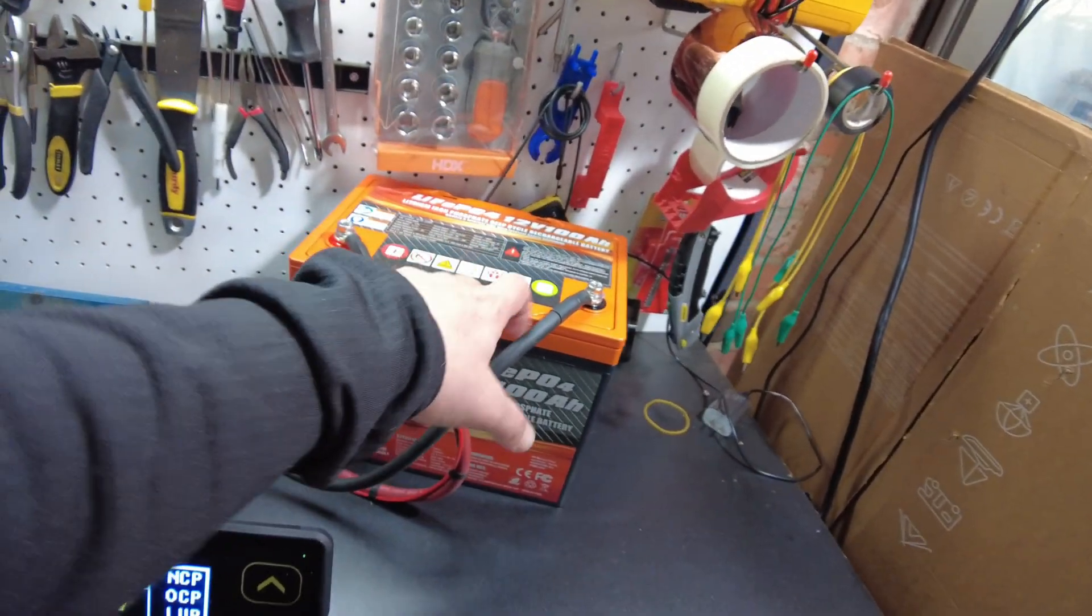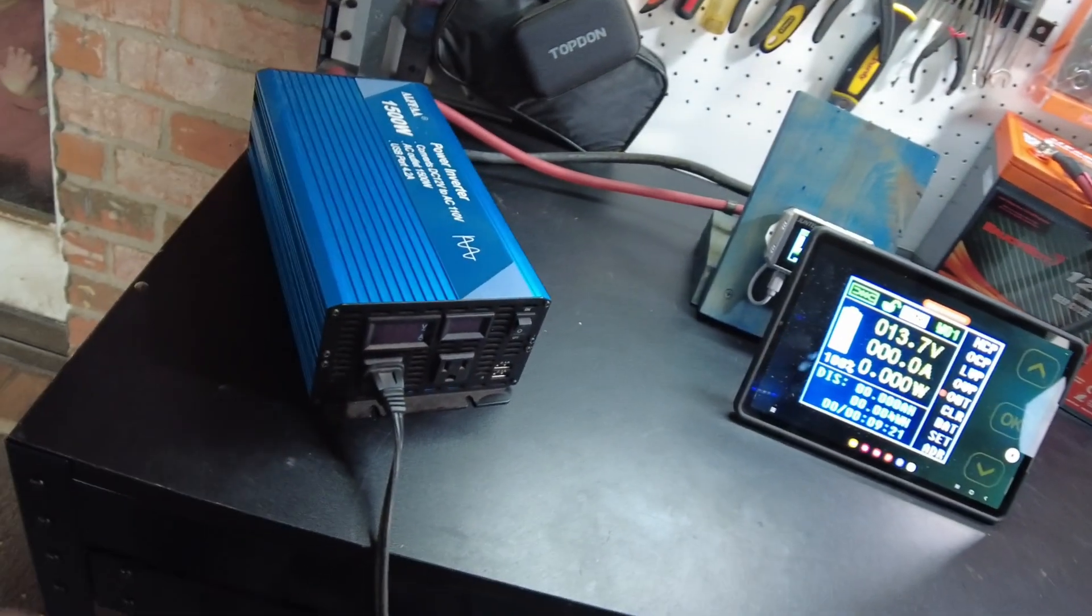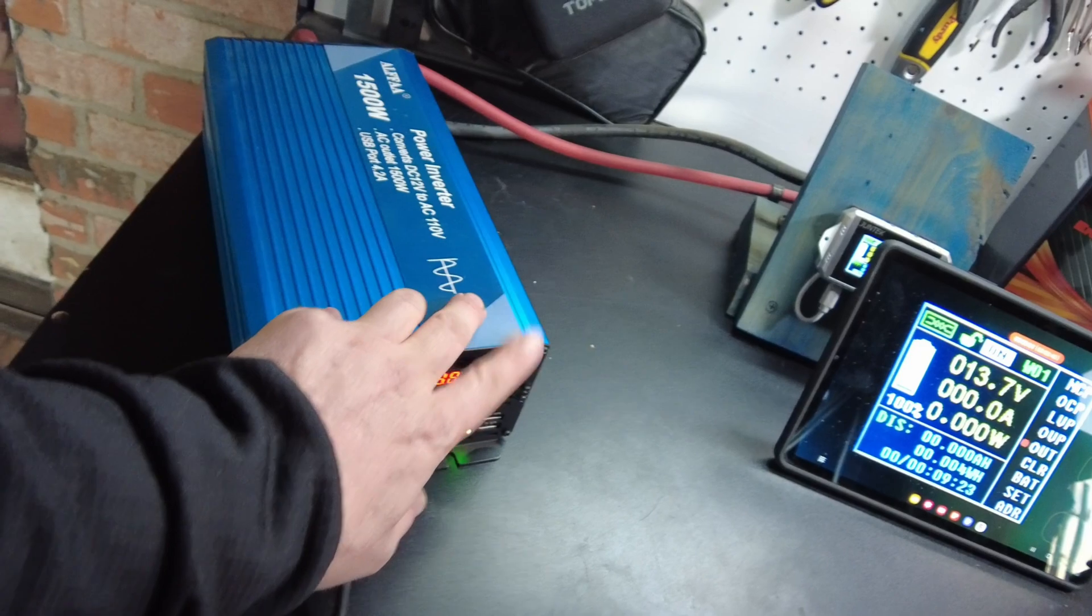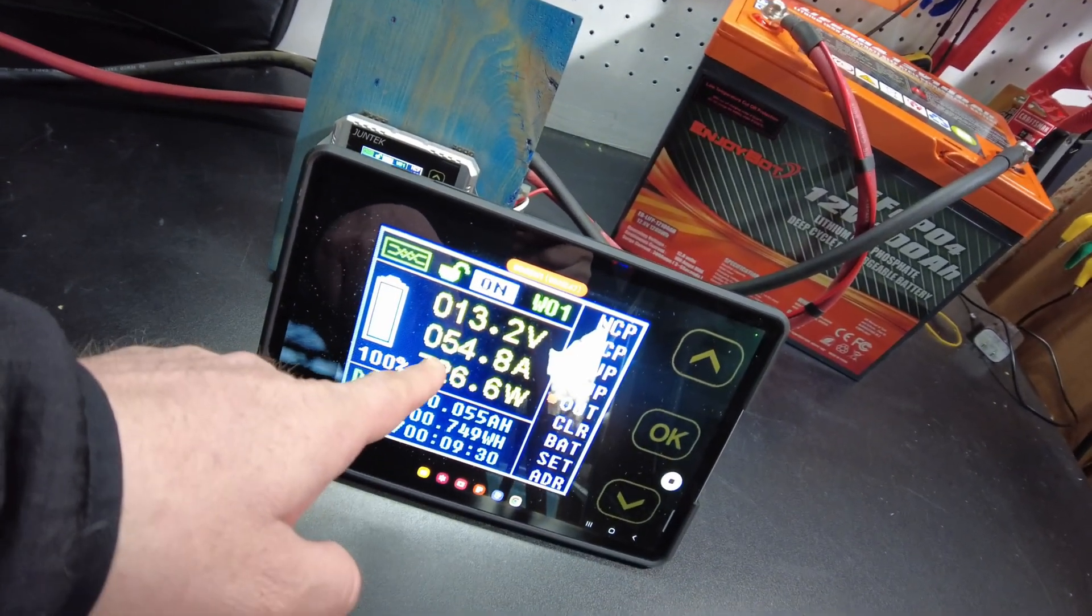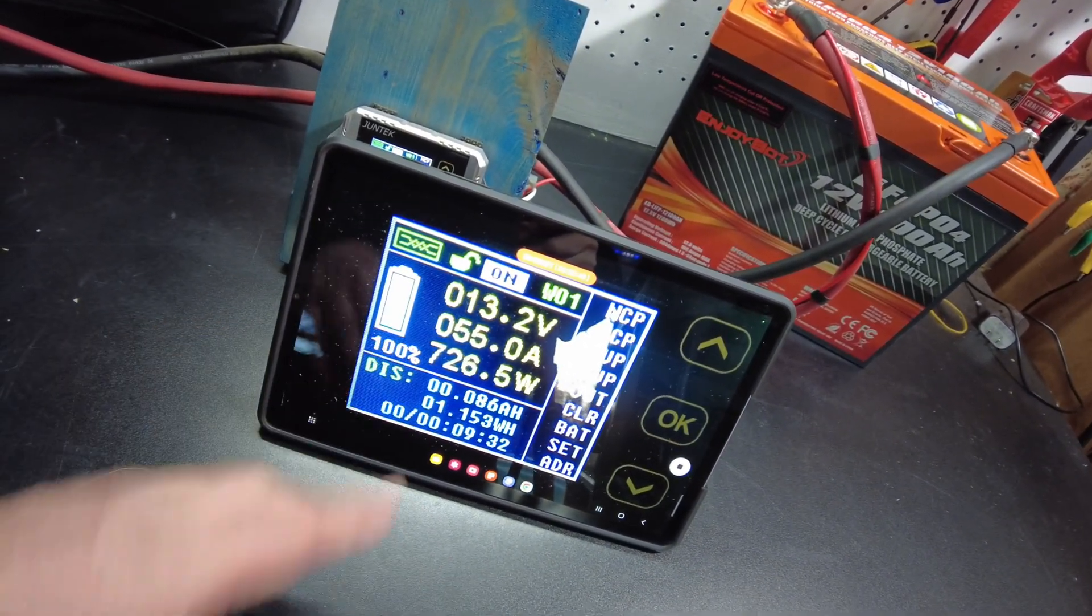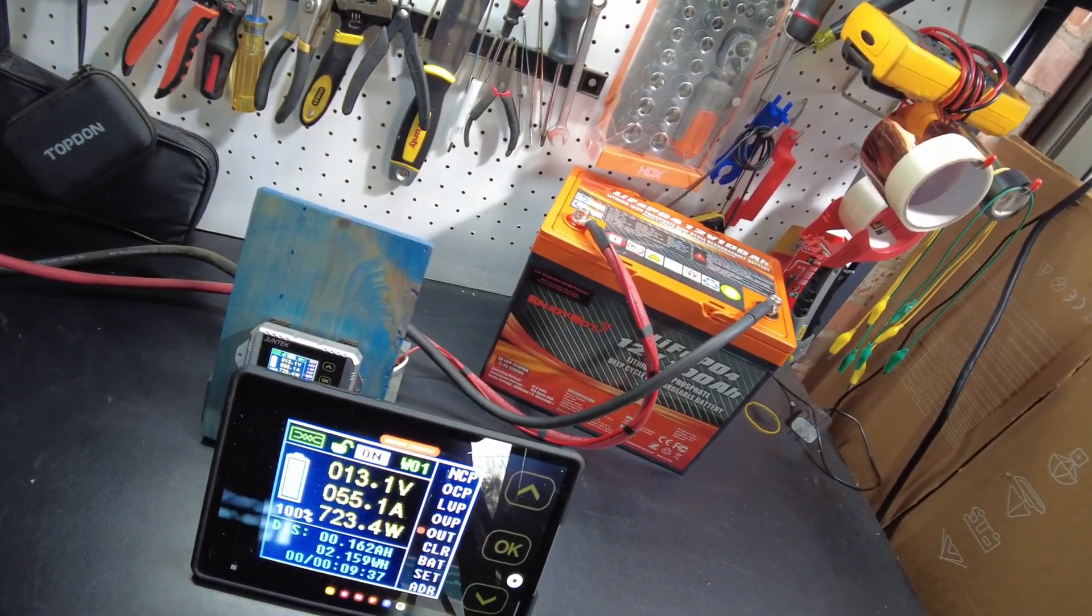Alright so the battery is fully charged. We are hooked up to the shot. Let's go ahead and turn the inverter on to start the test. And we are pulling 54, about 55 amps. We'll let that continue on and I'll be back when it's complete.